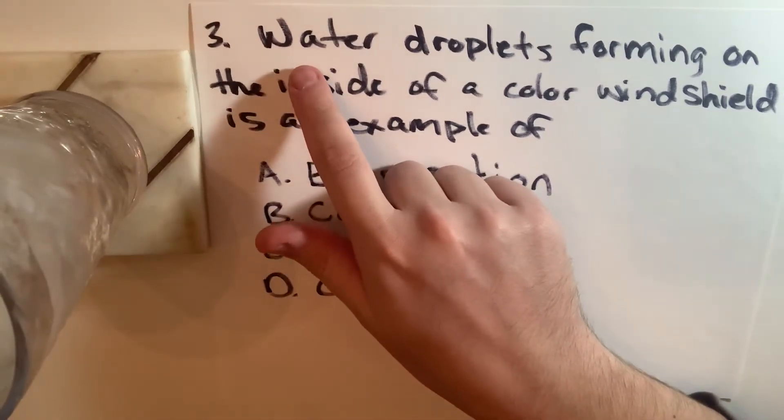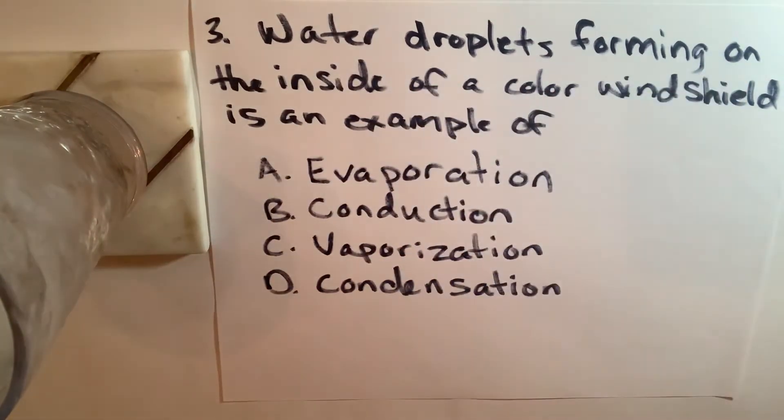For question three, it asks, water droplets forming on the inside of a car windshield is an example of what?